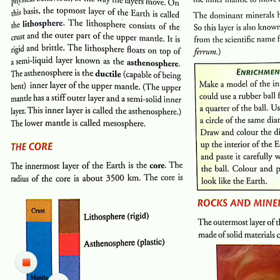It is about 3000 degrees Celsius in the lower mantle. The material in the lower mantle is semi-solid. The molten material in the lower mantle is called magma. The magma flows out as lava during volcanic eruptions.